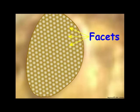The compound eye appears to be comprised of many hundreds or thousands of tiny facets. Each facet is actually the corneal lens for an individual photoreceptor unit called an ommatidium.